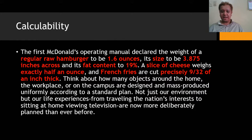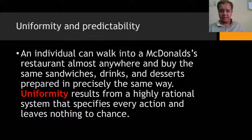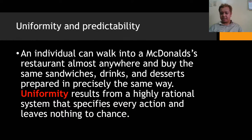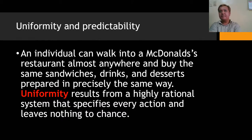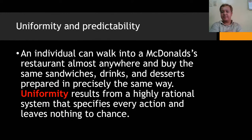Uniformity and predictability: an individual can walk into almost any McDonald's restaurant anywhere and buy the same sandwiches, drinks, and desserts prepared in precisely the same way. However, there are some differences between countries — for example, McDonald's in the Philippines offers rice with meals, whereas US McDonald's does not. Also, the standard chicken in neighboring Southeast Asian countries like Singapore and Malaysia is spicier than in the Philippines — what is considered regular there is equivalent to hot and spicy here.